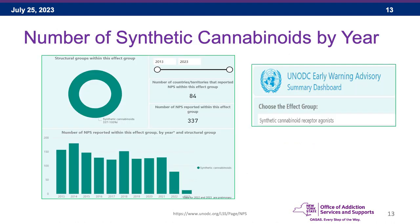The UNODC dashboard is a useful site that anyone can access. Here, looking at synthetic cannabinoid receptor agonists, from 2013 to 2023, 84 countries have reported 337 synthetic cannabinoids. The trend in 2022 showed a decline, and the early part of 2023 showed a further decline.